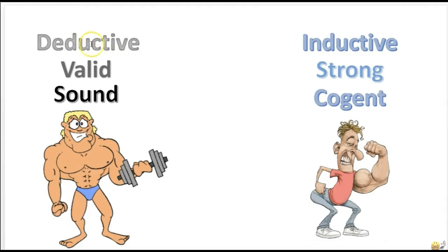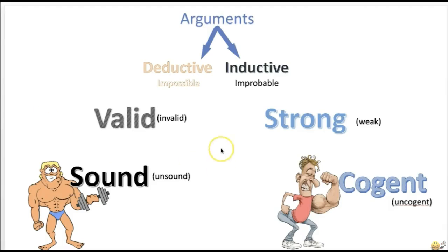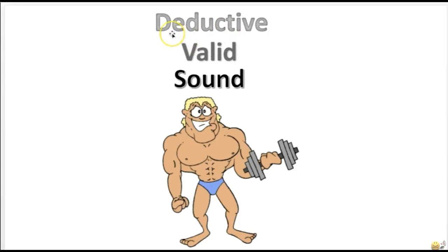Things to remember: deductive goes to valid and then sound; inductive goes strong and then cogent. If you don't have a valid argument, it's invalid. If you don't have a sound argument, it's unsound. If it's not strong, then it's weak. If it's not cogent, then it's uncogent. Now let's jump right in and do some practice problems, focusing on deductive arguments first, working our way up to a sound argument.